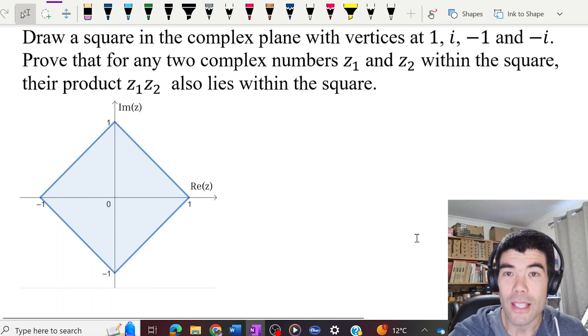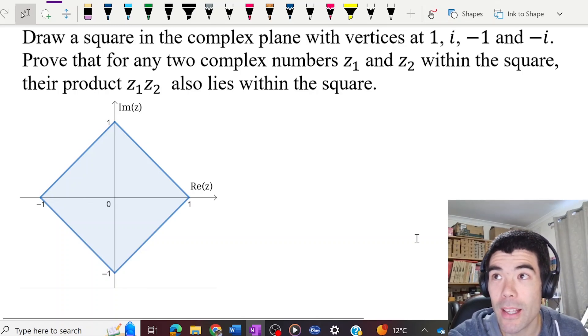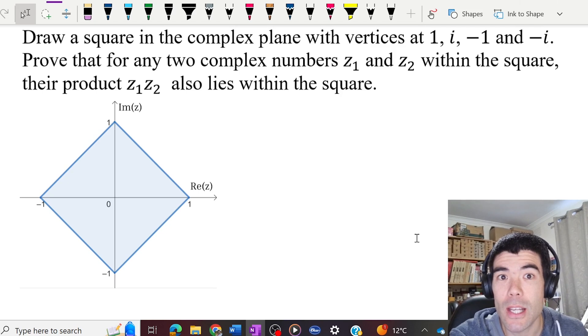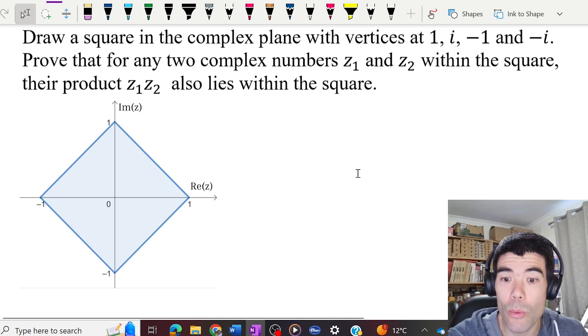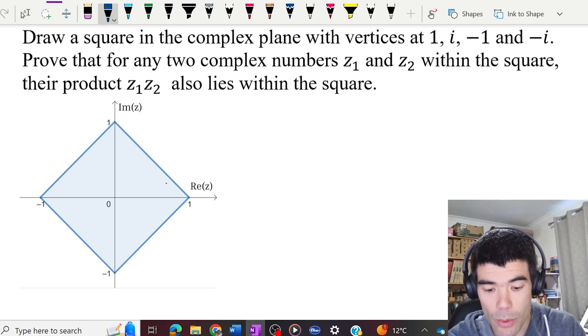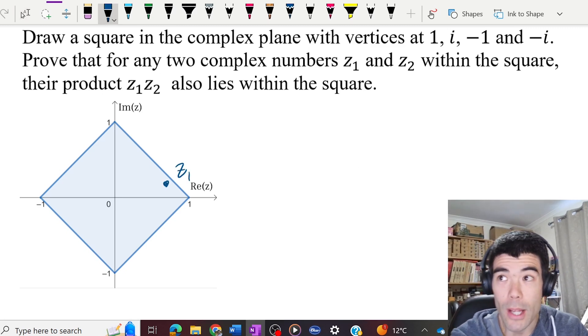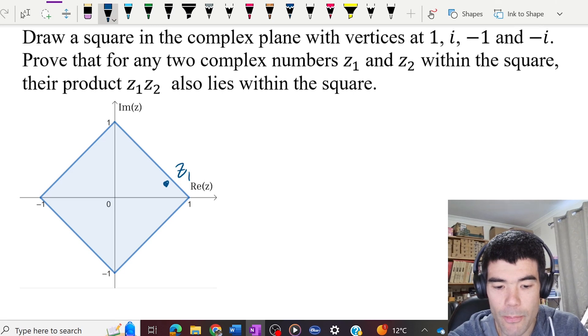We have an interesting complex numbers challenge here. We have a square in the complex plane with vertices at 1, i, negative 1, and negative i. We want to prove that for any two complex numbers z1 and z2 within the square, the product z1 z2 is also going to be within the square.